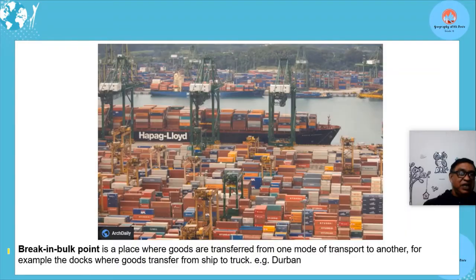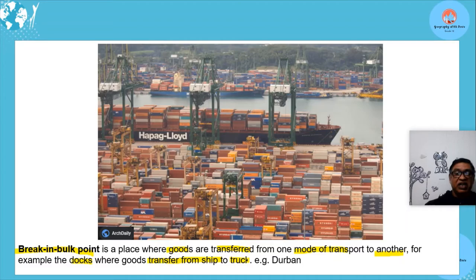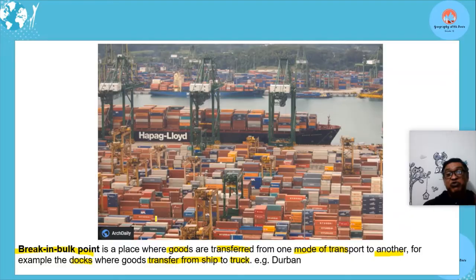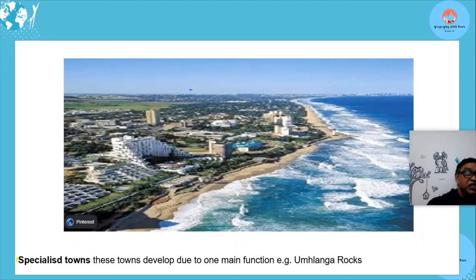A break-in-bulk point is where goods are transferred from one mode of transport to another. Durban is a good example — goods offloaded from ships are loaded onto trucks and taken away. So it's a transfer from one mode of transport to another; goods arrive in bulk and leave in smaller quantities by truck.